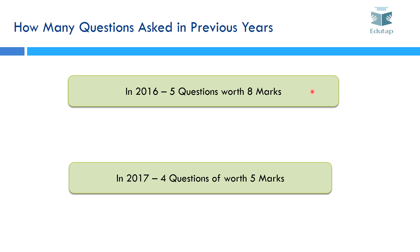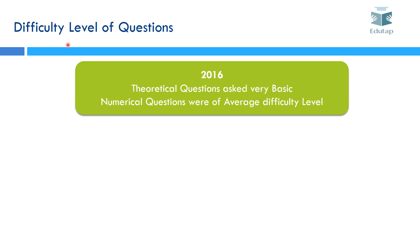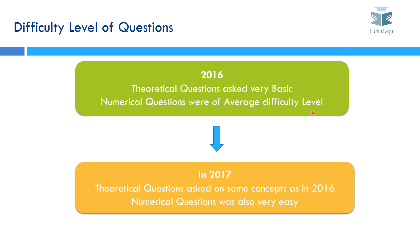Another aspect to take into account while studying bonds is that questions from bonds can be asked in the form of a theoretical concept or as a numerical. What was the difficulty level of questions asked in 2016 and 2017? In 2016, the theoretical questions were very basic — there were two theoretical questions — and the numerical questions were of average difficulty level, basically on bond pricing and bond yield.